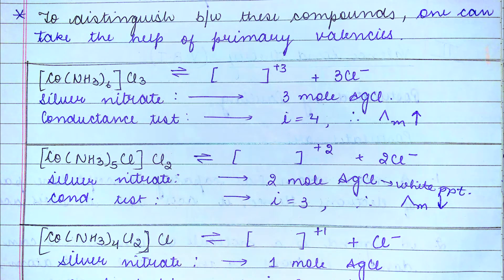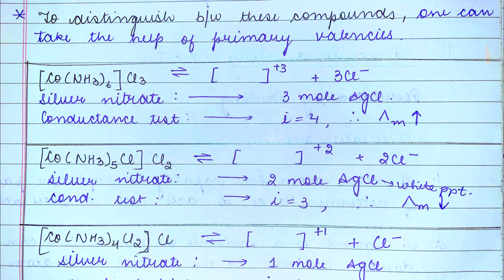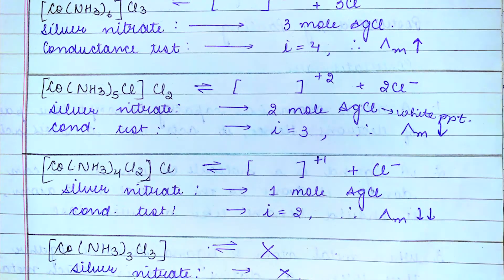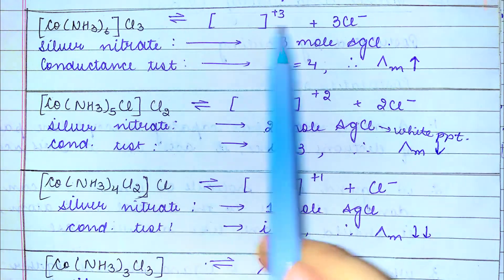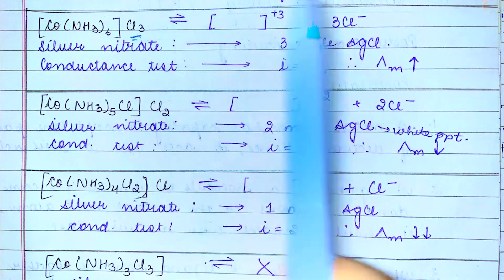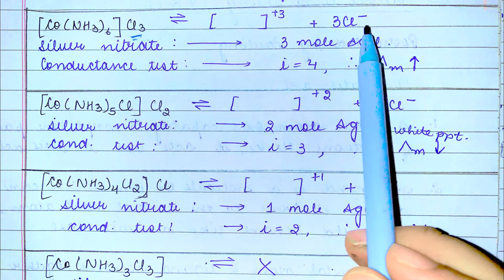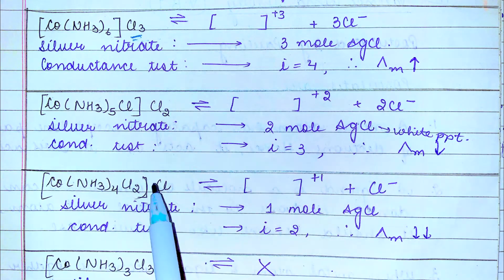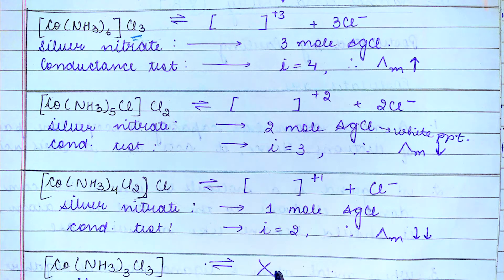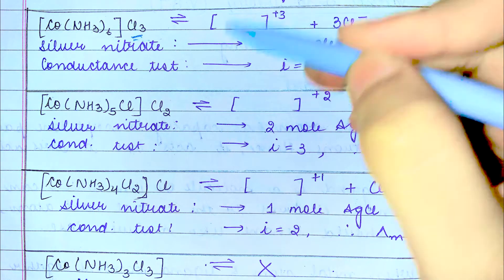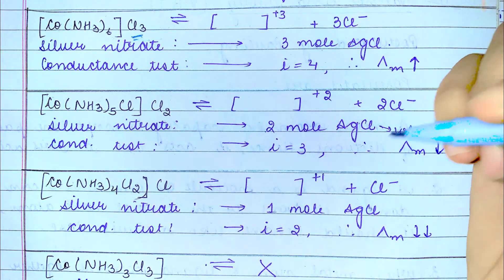To distinguish between these four compounds, one can take the help of primary valencies. In the first compound, three chloride ions are outside the coordination sphere and will ionize in aqueous solution, giving three chloride ions. The second gives two chloride ions, the third gives one chloride ion, and the fourth gives no chloride ion. The ionization sphere valencies are +3, +2, +1, and 0 respectively.